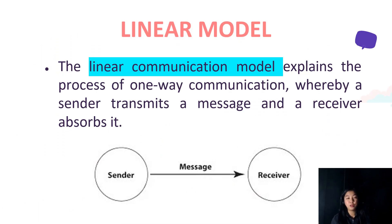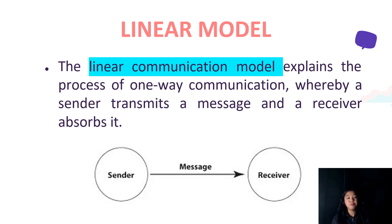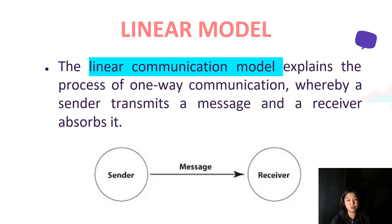The first type of communication model is what we call the linear model. Take a look at the diagram — you will see here that it only involves the sender, the receiver, and the message itself. In this type of communication model, it simply explains the process of one-way communication. Meaning, there is no feedback to be given by the receiver. The sender simply delivers or transmits a message, and then the receiver will just merely absorb it.